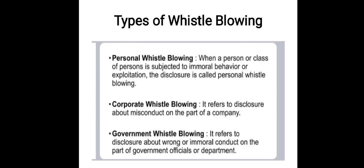There are various types of whistleblowing, classified into three categories: personal, corporate, and government. When a person or a group of persons is subjected to immoral behavior or exploitation, it is called personal whistleblowing. Corporate whistleblowing refers to a disclosure about misconduct on the part of a company. Government whistleblowing occurs when disclosure is made about government officials or a government department engaging in wrong or immoral conduct.